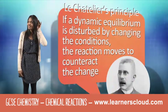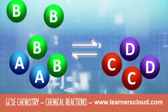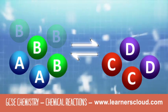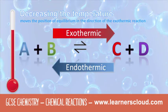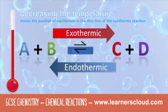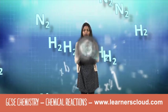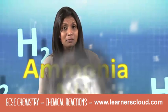If a dynamic equilibrium is disturbed by changing the condition, the reaction moves to counter the change. The reaction will move to get rid of the extra heat by absorbing it in an endothermic change to form ammonia.